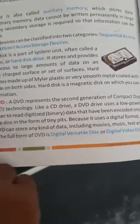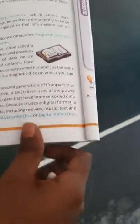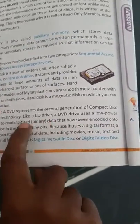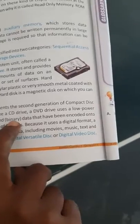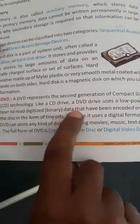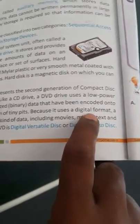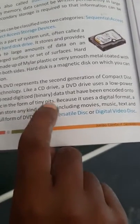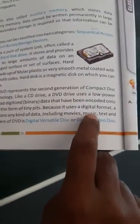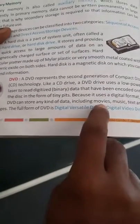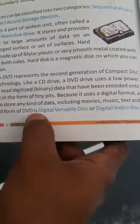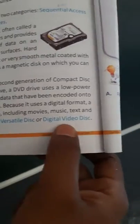While writing, tiny bits are formed on the surface of the CD. Because it uses a digital format, digitalized data, computer can understand only in the form of two digits, 0 and 1. Because it uses digital format, a DVD can store any kind of data including movies, music, text and graphical images. The full form of DVD is digital versatile disk or digital video disk.